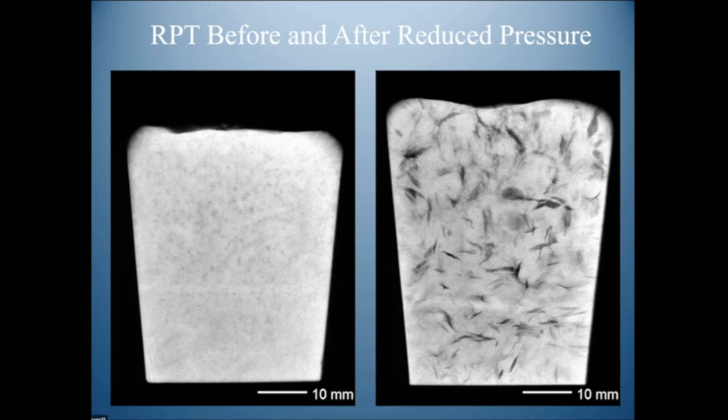If one of these unfurled bifilms ran right across the centre of a test bar you would have virtually zero elongation — and we have pictures proving this. The oxide is found completely over the fracture surface, and the matching oxide is on the matching piece of fracture. This is very common in practice.